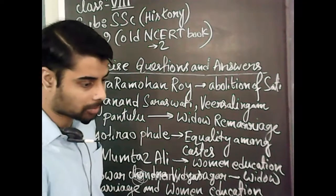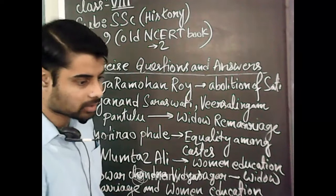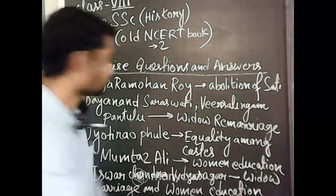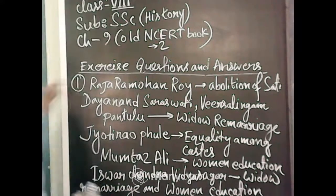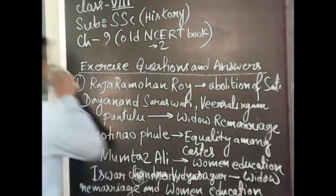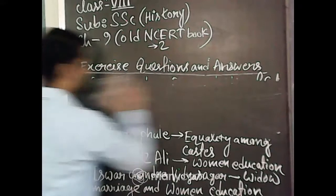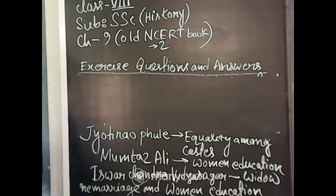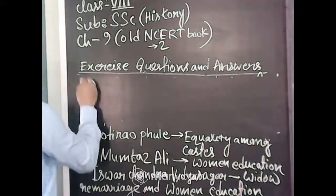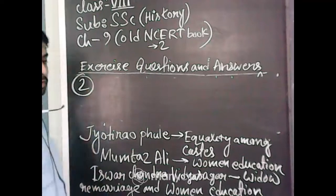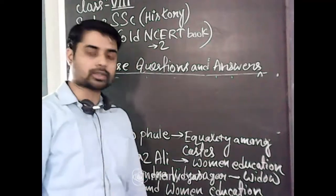Next segment, these are the objective type of question answers. Next segment is the true and false. If you have completed, I am rubbing this for another segment.